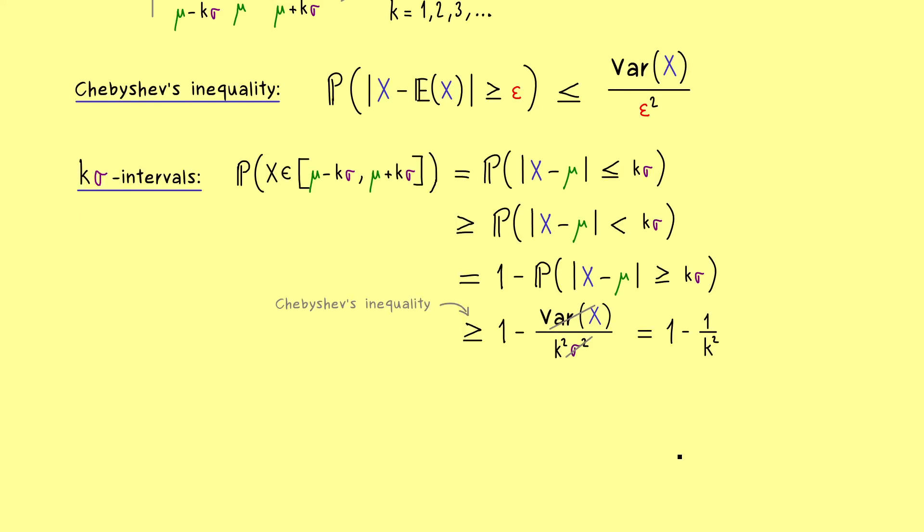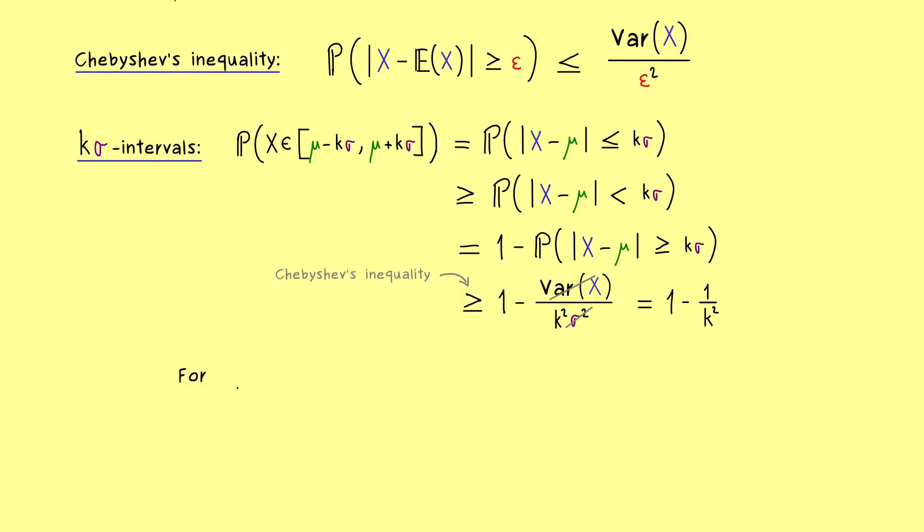However, for all other cases, we get a positive number here on the right-hand side, so it tells us something for this probability. For example, for k equals 2, we have that 1 over k squared is 1 quarter. Hence, the probability of our two-sigma interval here is greater than or equal to 75%. And again, please note, this is a general result. It holds no matter which distribution we have for the random variable X.